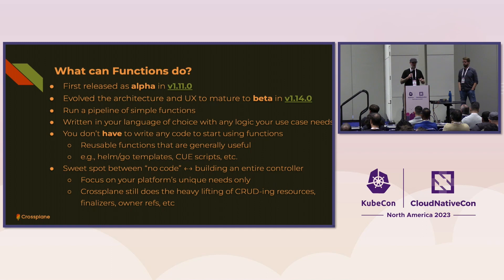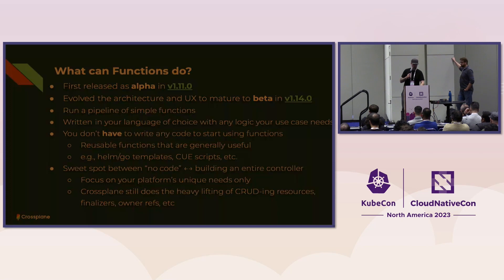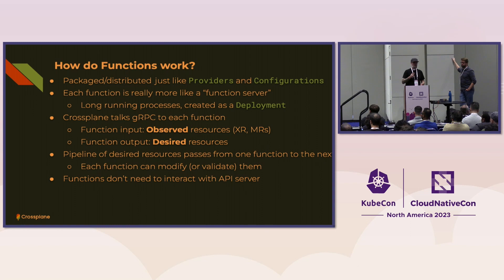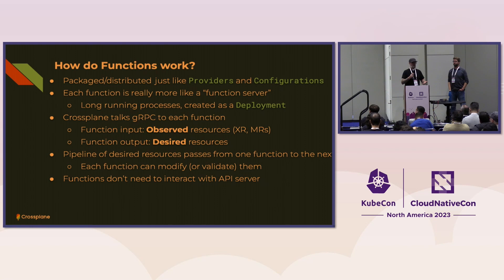The general idea with Composition functions is that instead of specifying a template list of resources in the configuration object, you tell Crossplane to call these functions. You supply those functions — either write them yourself, which is hopefully straightforward, or find them in the existing marketplace. The function pipeline receives as input the observed state of the world. Crossplane says, a developer wants a bucket, and since it's new there are no existing resources yet, so it passes the platform-defined schema to this pipeline of functions asking: given this observed state, tell me what the desired state should be.